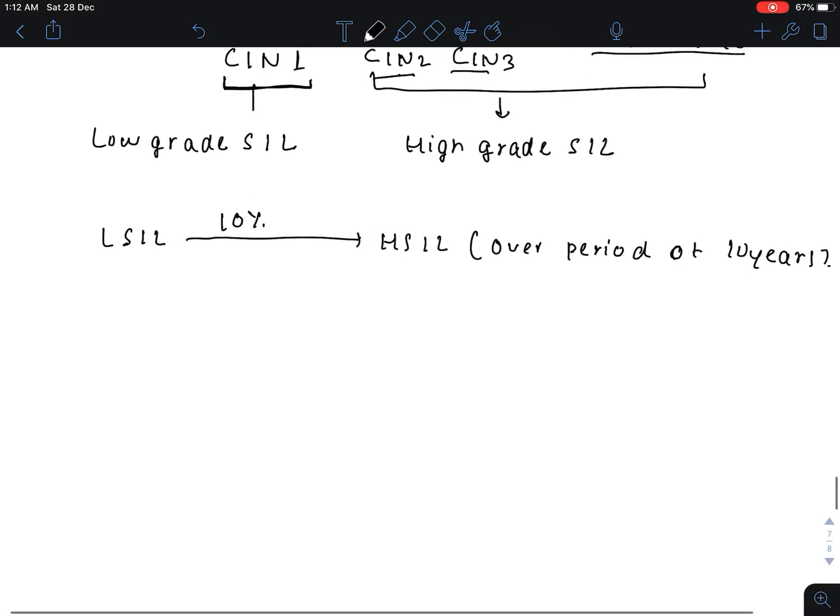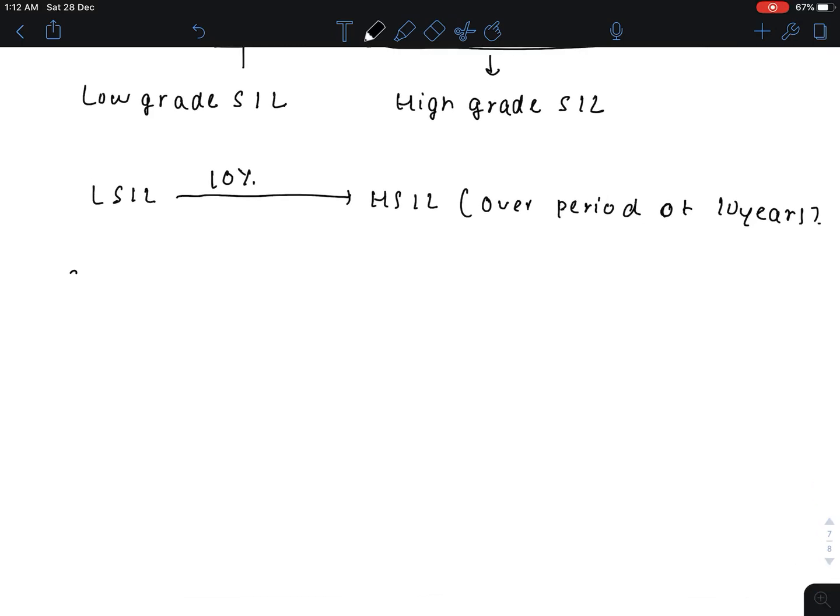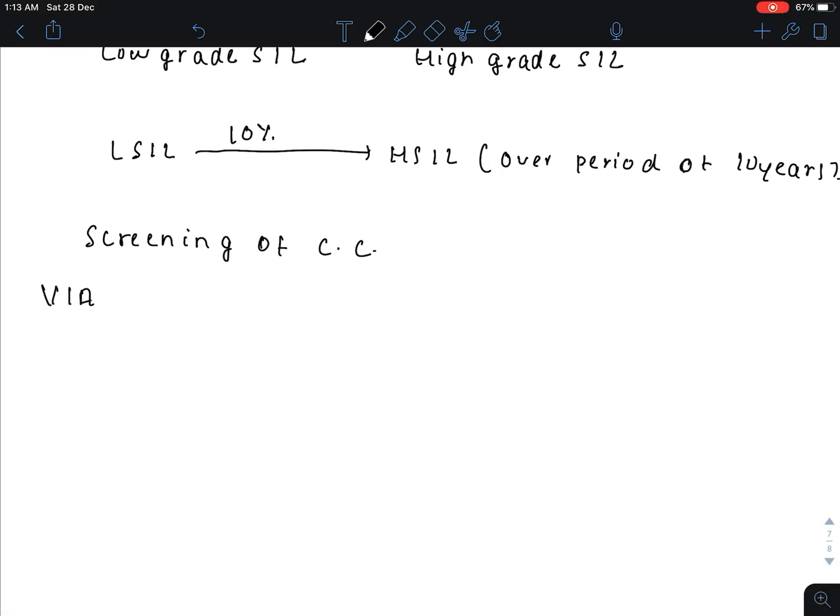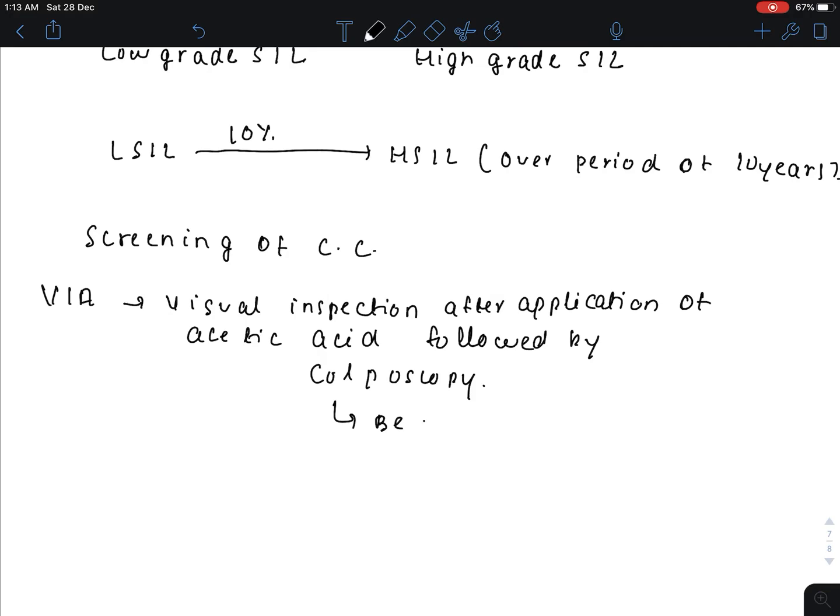Now for screening of cervical cancer. Screening is done by VIA - visual inspection after application of acetic acid - followed by colposcopy. This is the best method for screening.